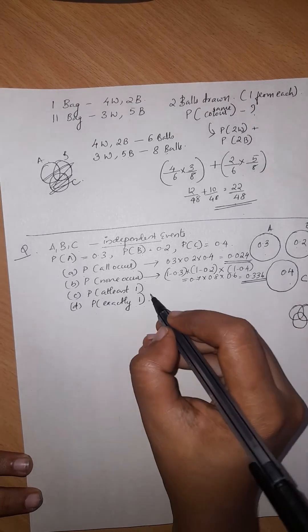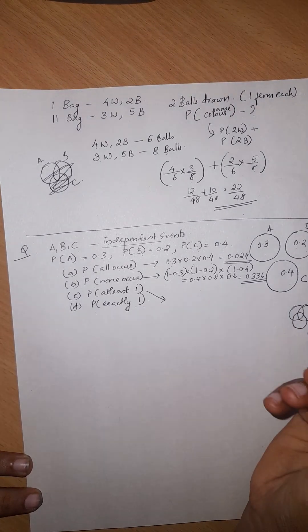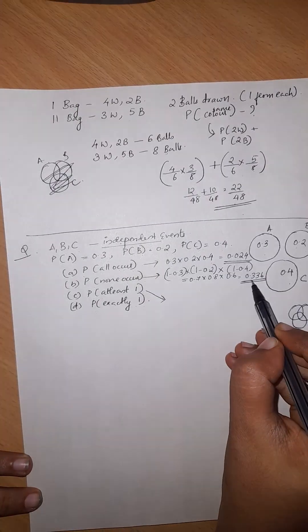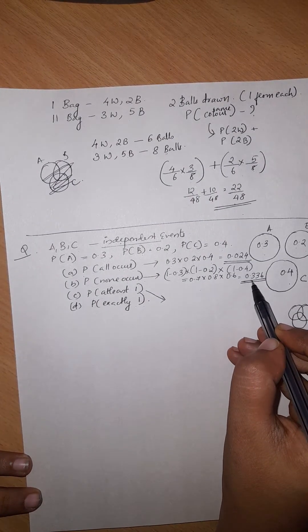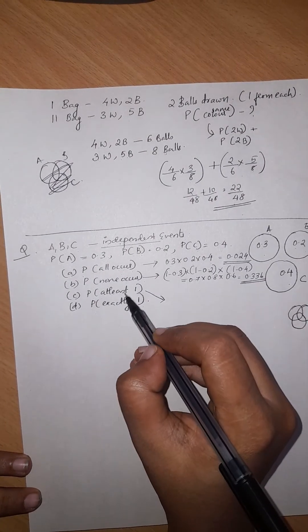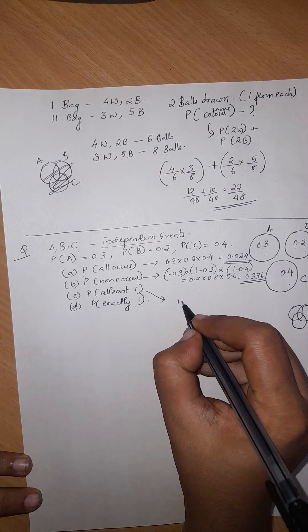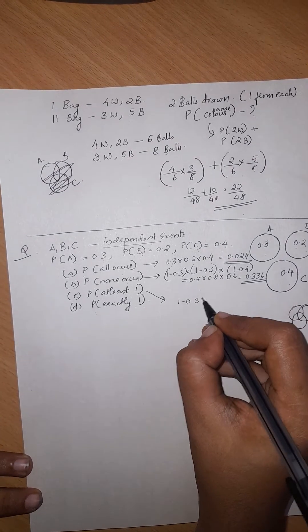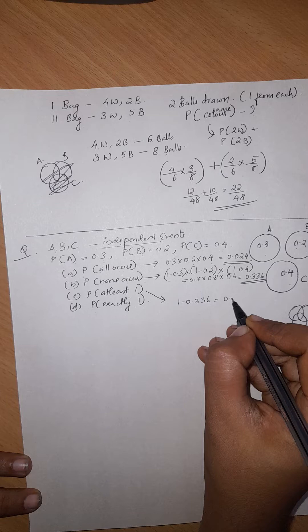This is at least one occur. If we get at least one occur, what will be at least one occur? This is exactly opposite. So, 1 minus 0.336, so that is 0.664.